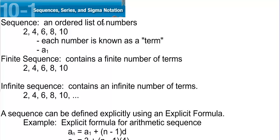A sequence is an ordered list of numbers, such as 2, 4, 6, 8, 10. Each number is known as a term. A sub 1 is the first term — in this case, A sub 1 is 2. A sub 2 is equal to 4, and so on. A sub 3 is 6.